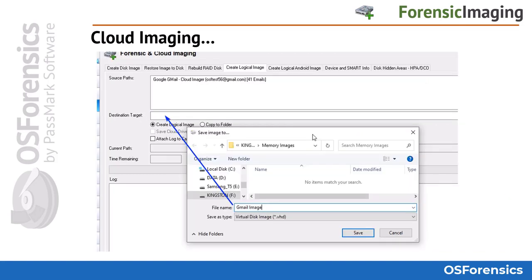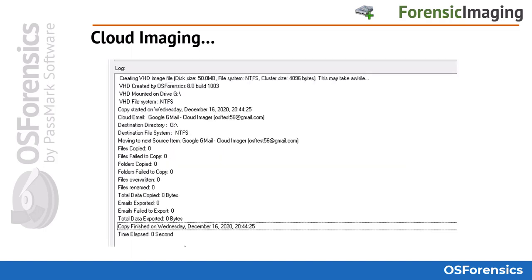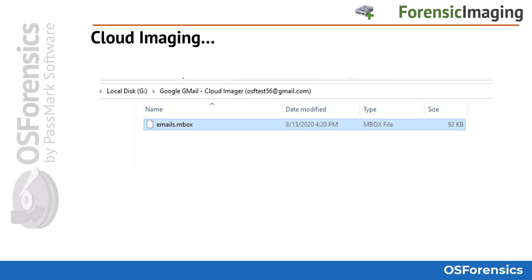You must provide a name and a path for the cloud image. As you can see, the image is created in the Virtual Hard Disk, or VHD, format. The final step is to click Start, at which point the extraction process will begin. Once the process starts, the log window will show all processes in real time from beginning to completion. You can then view the contents of the VHD in Windows or back in OS Forensics, where you'll find an inbox email file containing the emails from the imaged account.